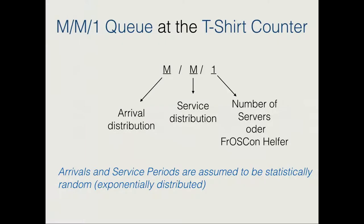When queuing theory as a discipline was maturing, a notation was introduced for understanding different kinds of queues. We're going to take one example: the M/M/1 queue, considered one of the simpler queue models. In the notation, the first letter represents the arrival distribution—in our case, arrivals of incoming participants to the T-shirt counter. The second is the service distribution. And lastly, the number of servers—in our case, the FrostCon helpers giving out T-shirts.